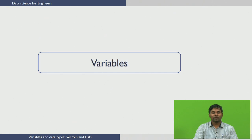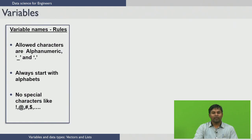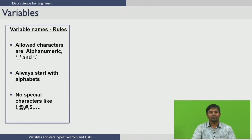Let us see the rules for naming variables in R first. Variable names in R must be alphanumeric characters, with the exception of underscore and period as the only special characters allowed. The variable name must always start with an alphabet, and no other special characters are permitted.